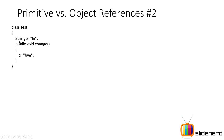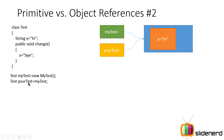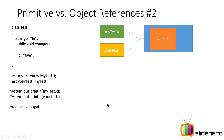But when you talk about object references, it's different. Let's take an example: class Test has instance variable String x = 'hi' and a method public void change() that sets x = 'bye' — it changes the instance variable's value inside the method. When I say test myTest = new test() and then test yourTest = myTest, myTest contains some address, and yourTest contains that same address. Both point to the same actual object. So printing myTest.x and yourTest.x both give 'hi'.